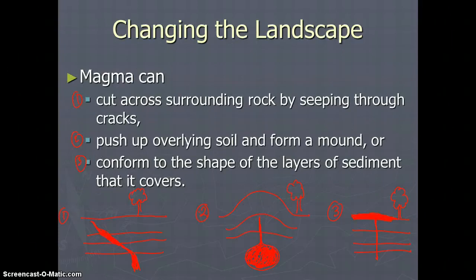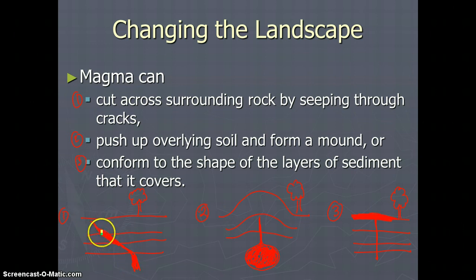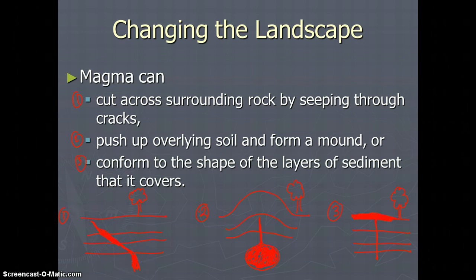Magma can also change the landscape. Think about the island of Hawaii and how it looks so incredibly different because of constant volcanic eruptions. One thing magma can do is cut across surrounding rock by seeping through cracks. Magma can actually melt its way and cut across rock layers all the way up to the surface because it's very, very hot.